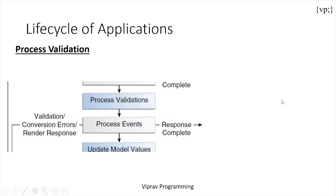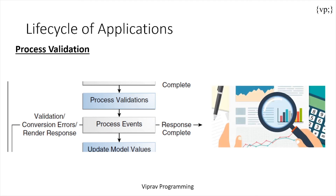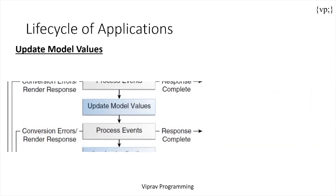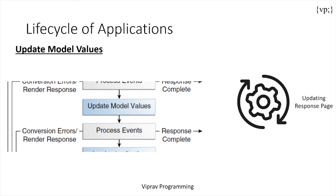Next there is process validation, which examines the component attributes that specify the validation rules and compares them to the local data. Then there is update model values, which updates the local data to fit the input component's value attribute, meaning it creates new data.